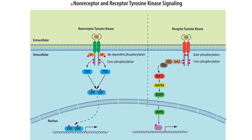The difference between non-receptor and receptor tyrosine kinase signaling is important for Step 1 and the Comprehensive Basic Science Exam. For non-receptor tyrosine kinases, the kinase activity comes from the JAK enzyme. When the ligand binds the monomers they form a dimer, which attracts phosphorylated JAK to bind the receptor. This promotes cross-phosphorylation, leading to the activation and phosphorylation of STAT. Once phosphorylated, STAT forms a dimer and translocates into the nucleus, where it binds DNA and promotes transcription.